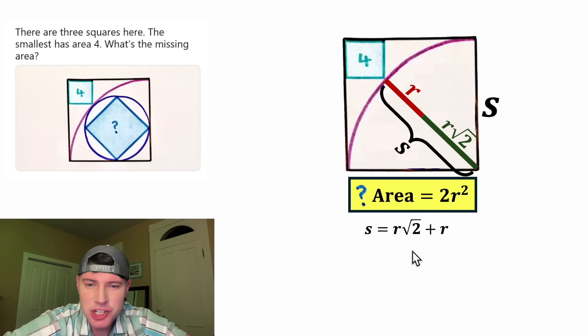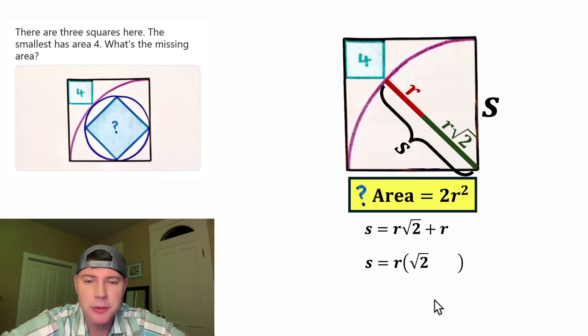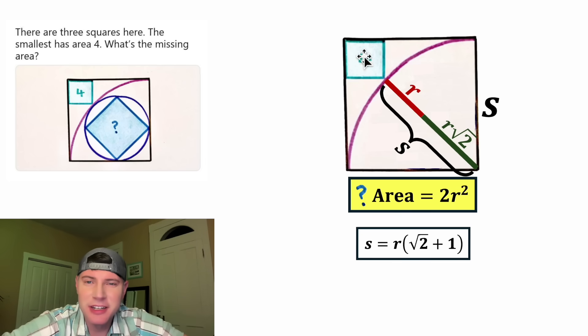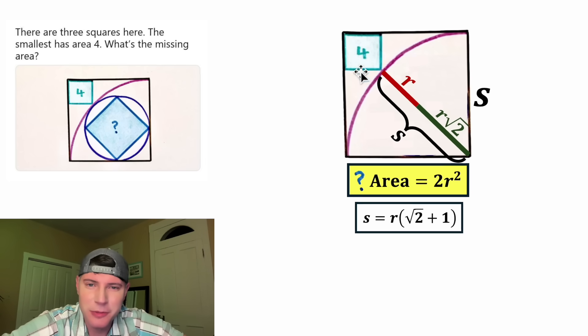And then from here, each of these terms contains an r. So let's factor out that r. r times what gives us r square root of two? That's square root of two. And then we're going to add to that r times what gives us r? Well, that's one. So now we've factored the r out of this. I don't think there's anything else we can do right now. Let's put a box around it.